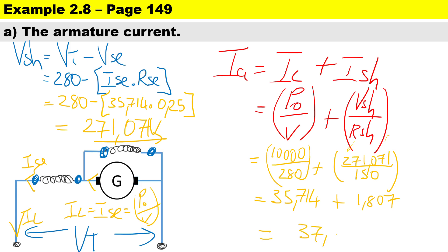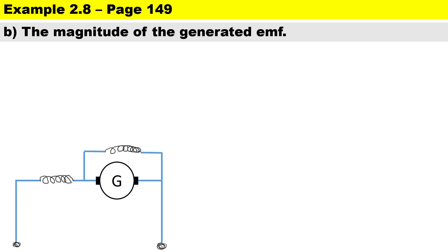That took quite a bit of work to work that out. Now number b, to calculate the magnitude of the EMF. Remember it is a generator, so it's going to be V plus Ia Ra plus Ise Rse plus Ia Rbrush.